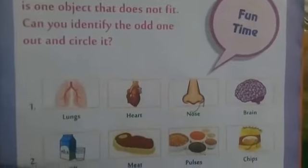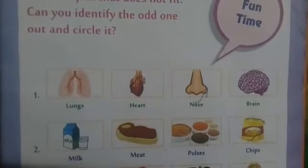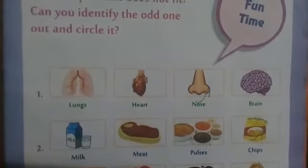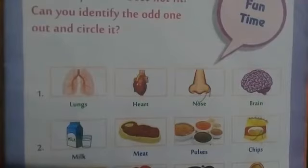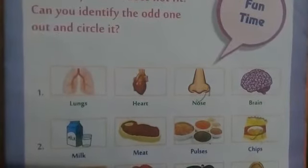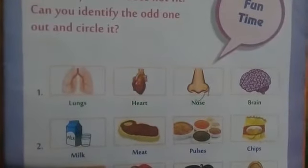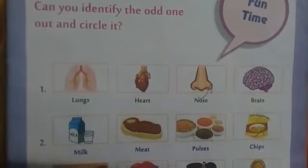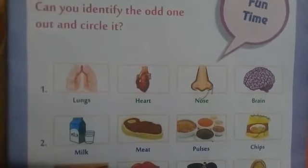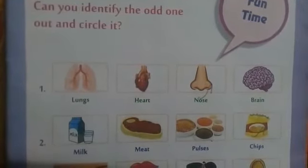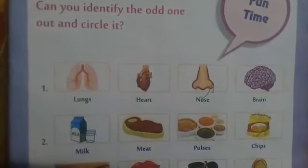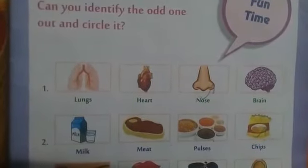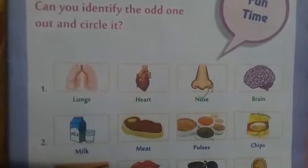Then second round. Milk, meat, pulses, chips. Milk, meat, and pulses are good for our health. But chips is junk food — that is not good for our health. Which one is the odd one out? Chips.